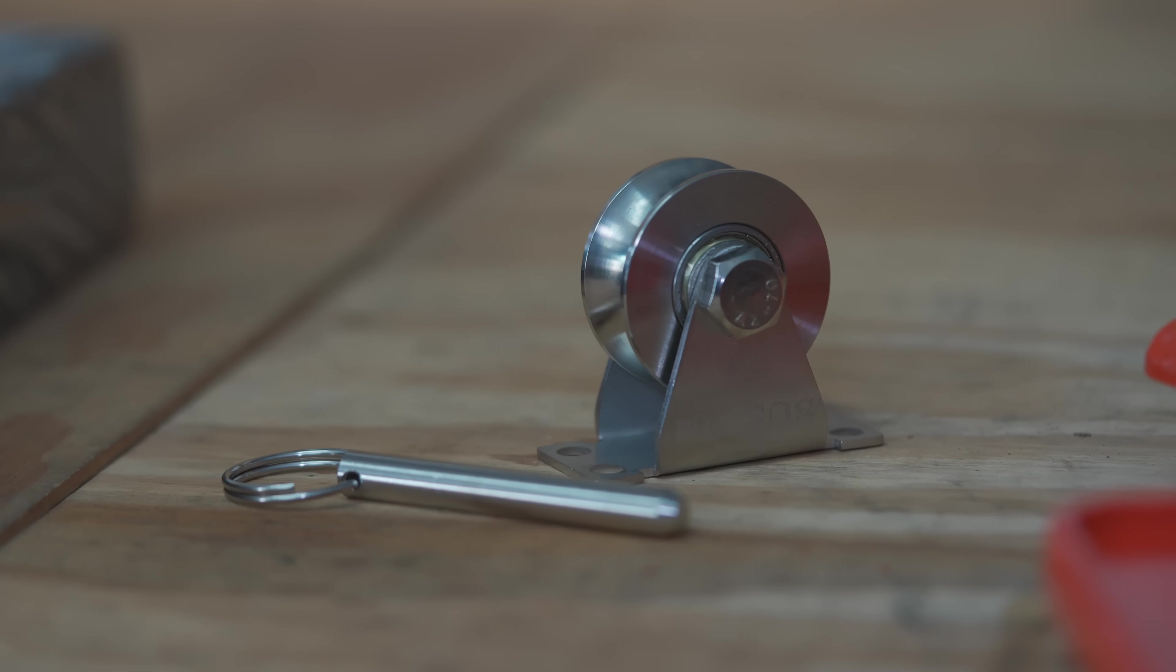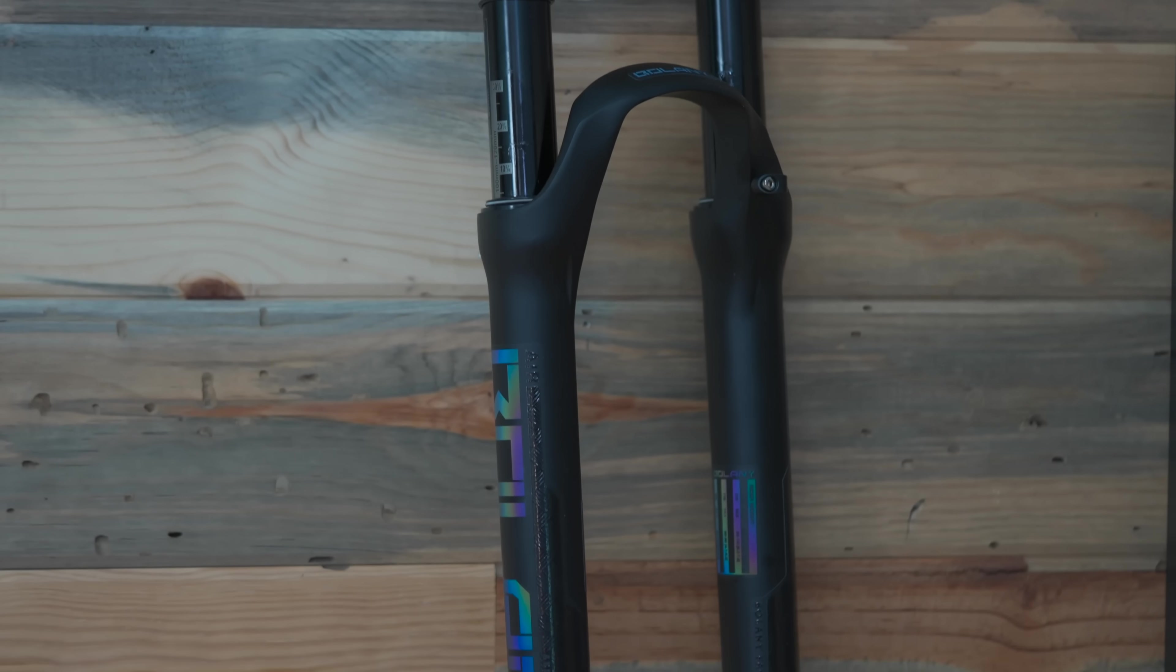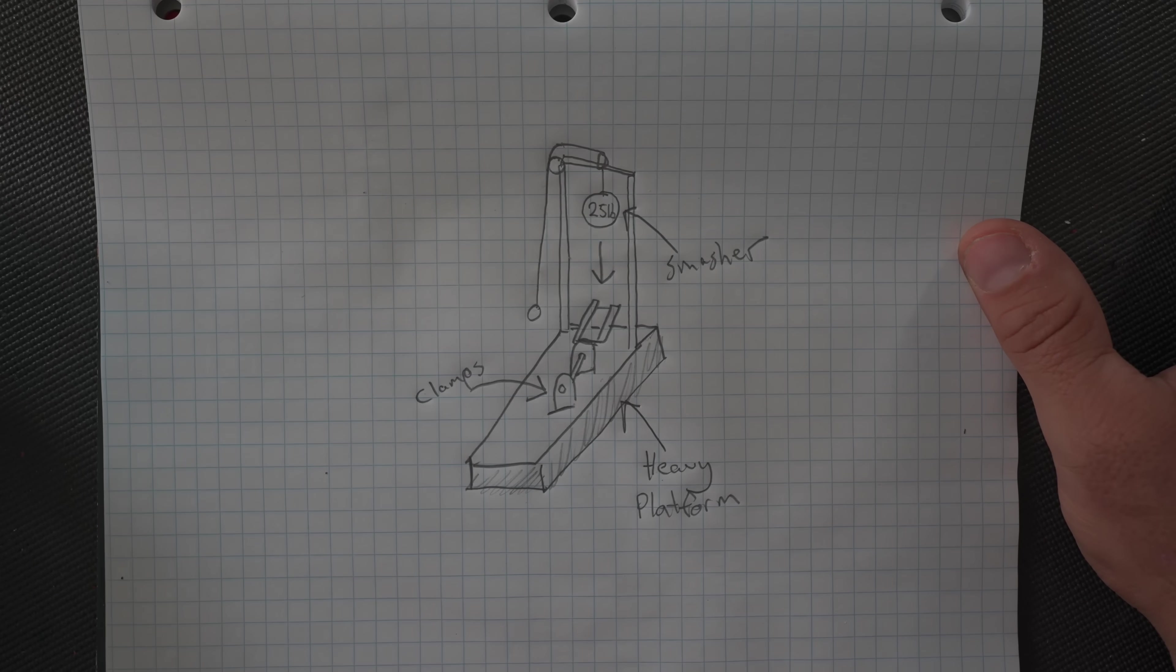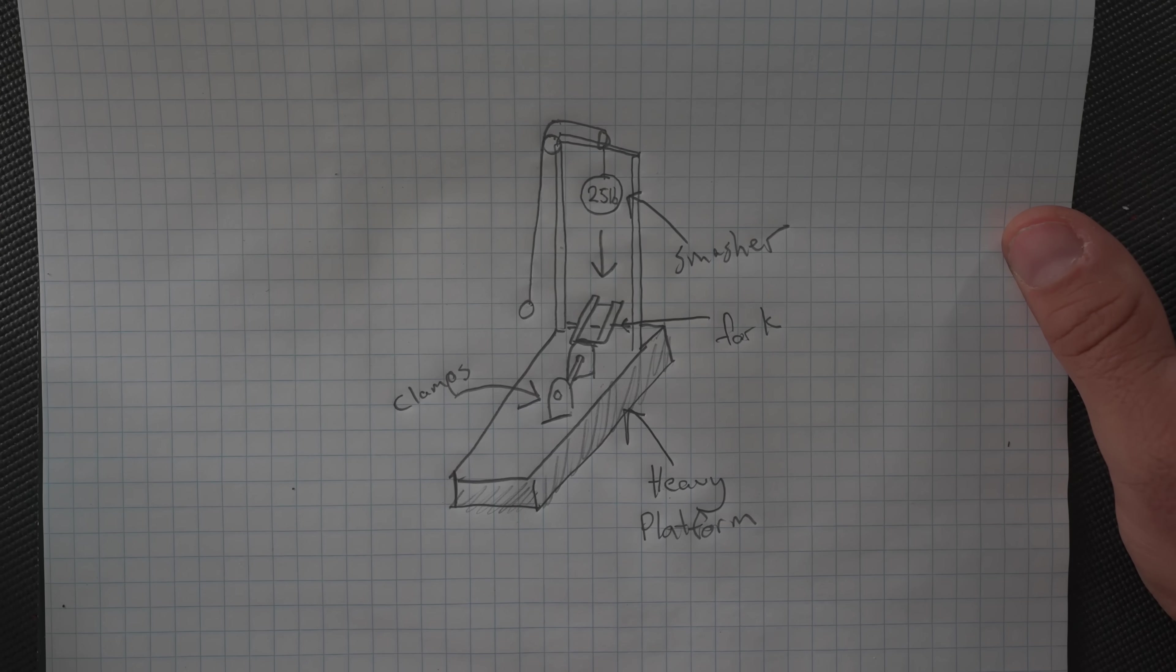Then we need some sort of smasher, a big weight that can drop from the same height every single time to smash said bike part. And then here you can see in this particular case, we will install our fork in it directly below the smasher.